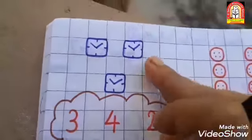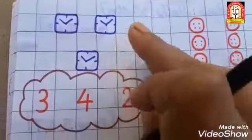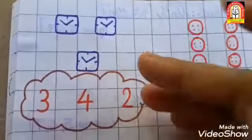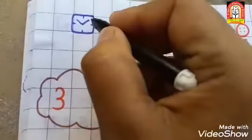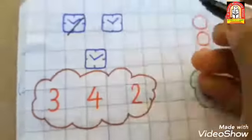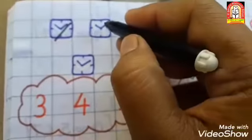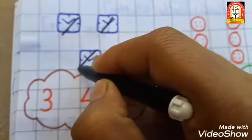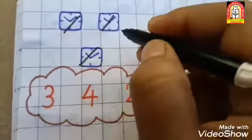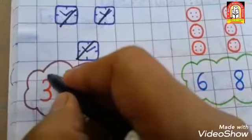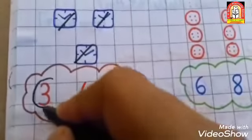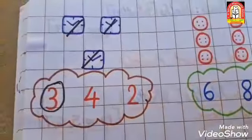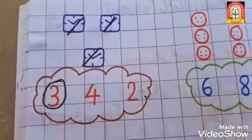Next one is clock. How many clocks are here? One, two, three. So we have to circle on number 3.